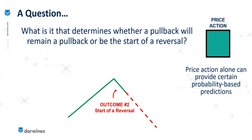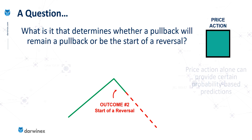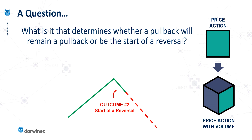Even with price action data alone, we can make certain probability-based predictions about which outcome is more likely. That might be based on things like what the time of day is — are we at a session open or are we mid-session? What does the preceding price action look like? Different assets also have a different propensity for trending or maybe mean reverting. But if we also combine this with volume data, this adds an extra dimension to our analysis and hopefully starts to allow us to turn those probabilities more in our favour.